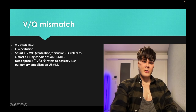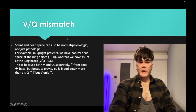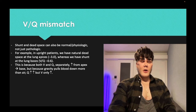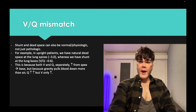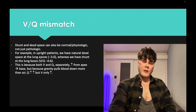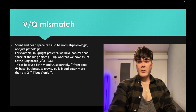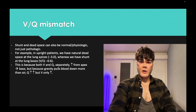Shunt and dead space can be normal — physiologic. When the patient is upright, gravity pulls blood down more than air, so at the apices we have relatively more ventilation than perfusion — high V/Q — natural alveolar dead space at the apices. At the bases, perfusion is greater than ventilation because blood settles — decreased V/Q — natural physiologic shunt at the bases.